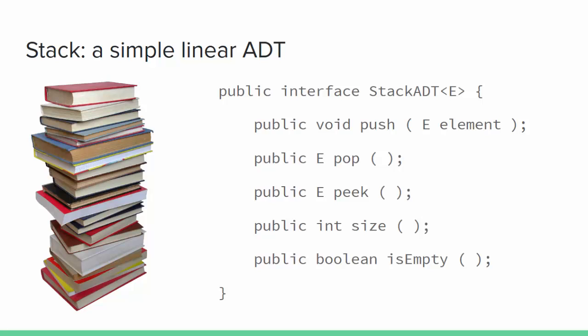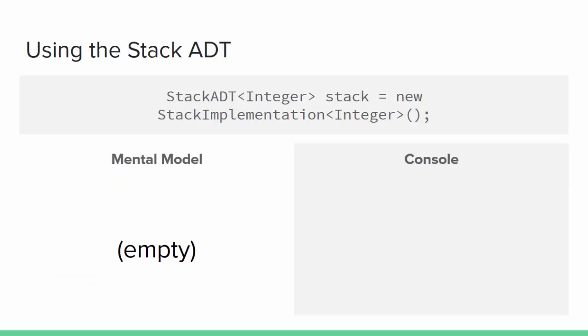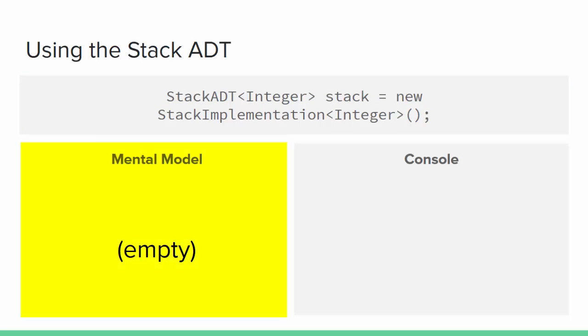This interface with its documentation defines the abstract data type. It tells you everything you need to know to work with any implementation of the stack ADT. Notice we're only dealing with an interface here — we've said nothing about how a class would actually store and manage these elements. We don't need to know about implementation to understand or use an ADT. We only know that it implements our ADT so we can use it as a stack, and from the user's perspective that's all that matters.